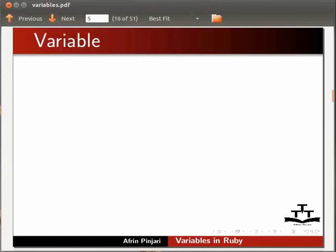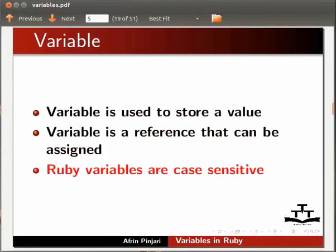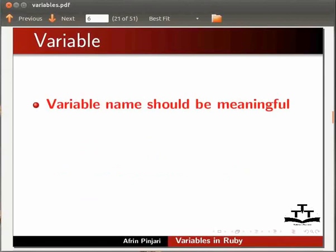Now, I'll explain what a variable is. A variable is used to store a value. Variable is a reference that can be assigned. Please note that Ruby variables are case sensitive. Variable name should be meaningful.